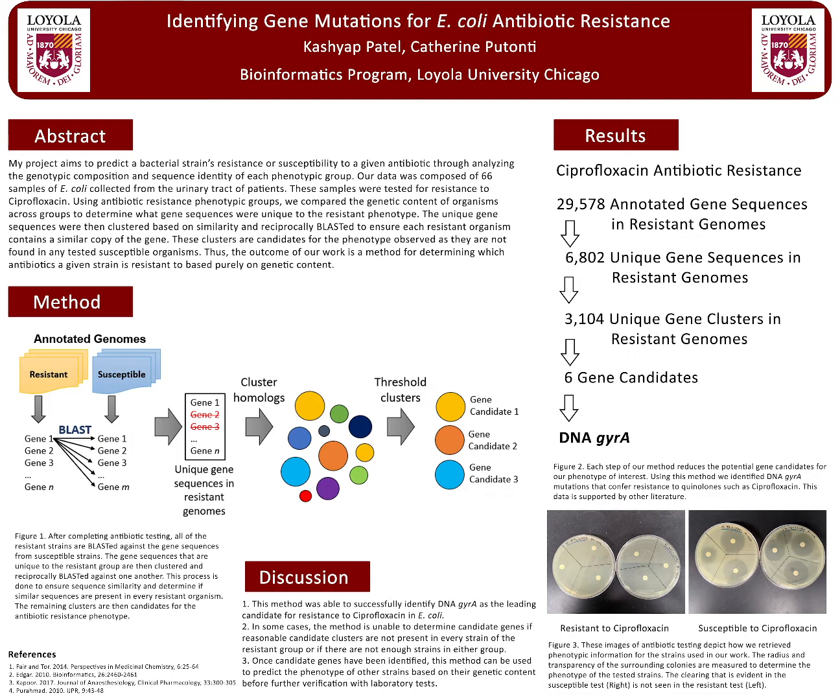These unique gene sequences were then clustered based on similarity and reciprocally blasted to ensure each resistant group contains a similar copy of the gene. These clusters are candidates for the phenotype observed, as they are not found in any tested susceptible organisms. Thus, the outcome of our work is a method for determining which antibiotics a given strain is resistant to, based purely on genetic content.